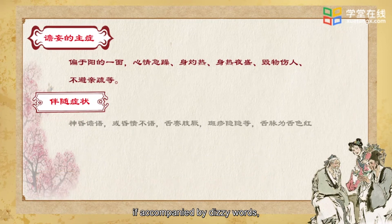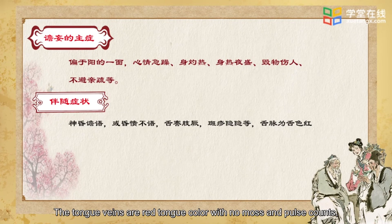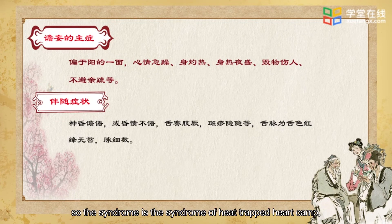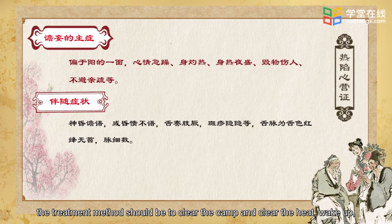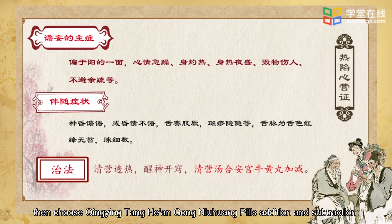If accompanied by dizzy words, or faint with no words, tongue twitching, faint rash, etc., with red tongue color, no moss, and rapid pulse — the syndrome is heat trapped in the heart camp. The treatment method should be to clear the camp and clear the heat, and awaken the mind. Choose Qingying Tang and An Gong Niu Huang Wan with additions and subtractions.